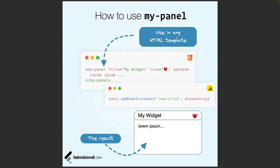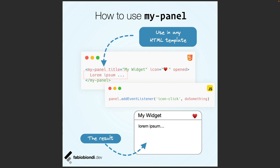When we want to use a Web Component, we can simply create an instance by using it as a custom element and assigning its attributes. In our example, the title, the icon, and the open status — and of course its content, which is called Slot. This will be very similar in any framework: React, Angular, or vanilla JavaScript, for example.